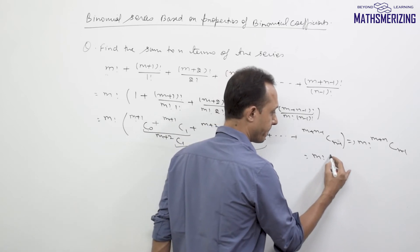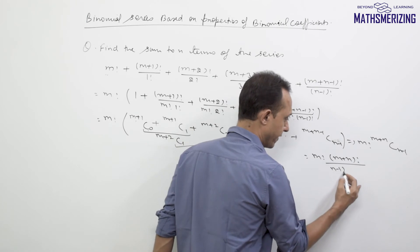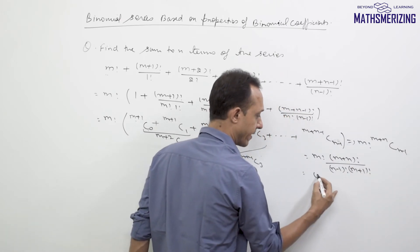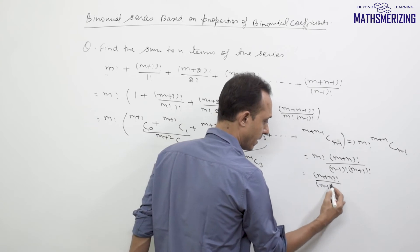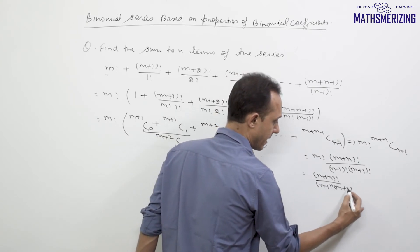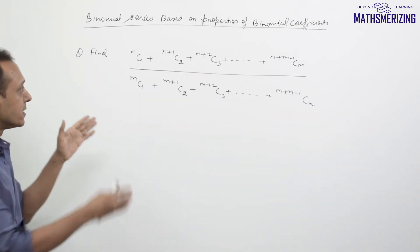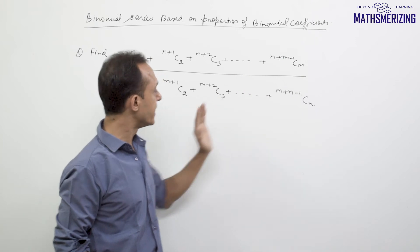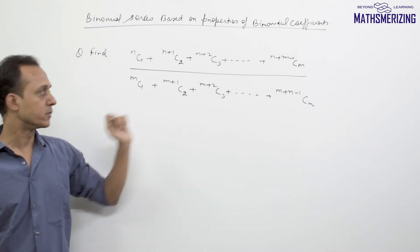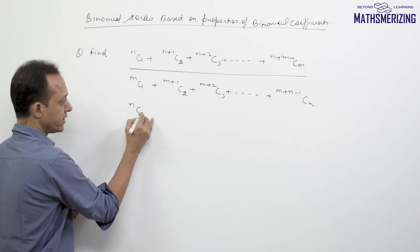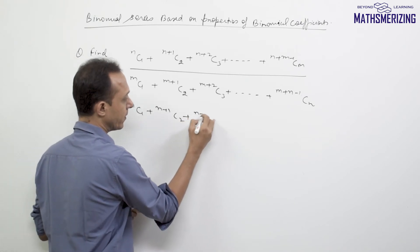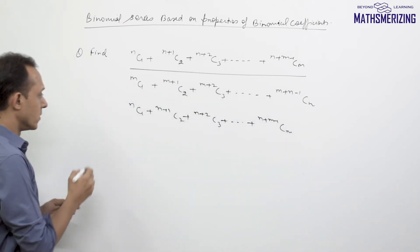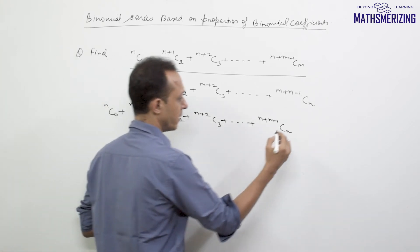I can also write this as factorial(m) times factorial(m+n) over factorial(n-1)·factorial(m+1). For the denominator series, which is NC1 + N+1C2 + N+2C3 + ... + N+N-1CN, I'll add NC0 and subtract NC0 to enable the same telescoping process.